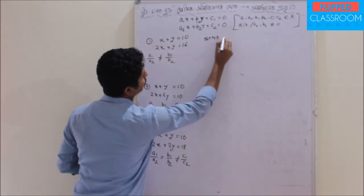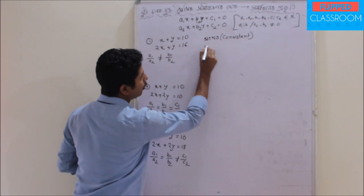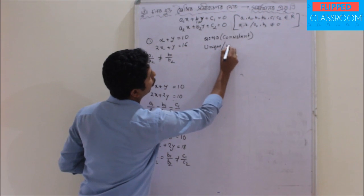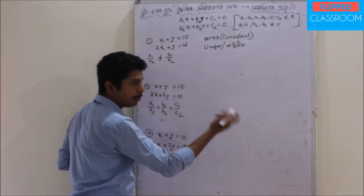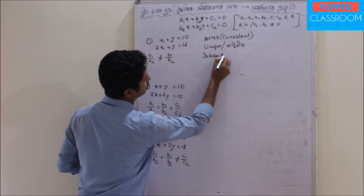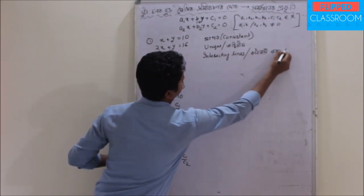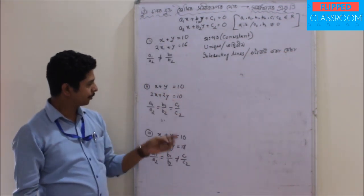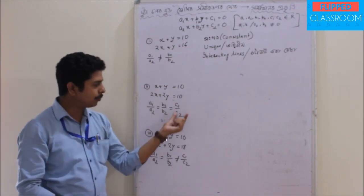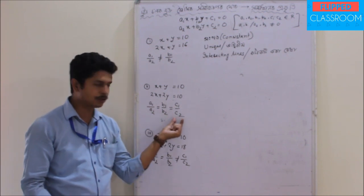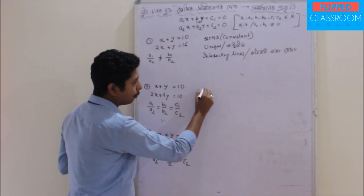When a1 by a2 is not equal to b1 by b2, we have a unique solution and intersecting lines. The other standard form condition is a1 by a2 equals b1 by b2 equals c1 by c2, or a1 by a2 equals b1 by b2 equals c1 by c2.